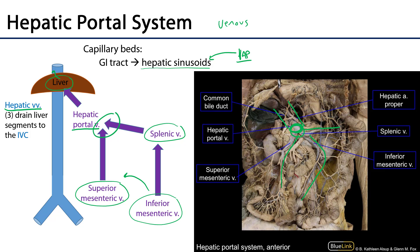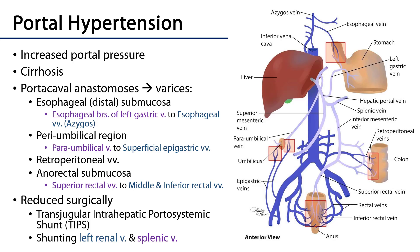There are cases where these two systems come into contact with one another. Portal hypertension is an increase of pressure within the hepatic portal system, generally a result of impeded blood flow to, through, or away from the liver. Its most typical cause is cirrhosis of the liver. With cirrhosis or any other impedance to blood flow, pressure builds within the portal system and may lead to varices between portal tributaries and nearby caval tributaries.